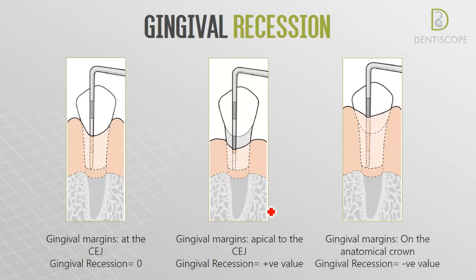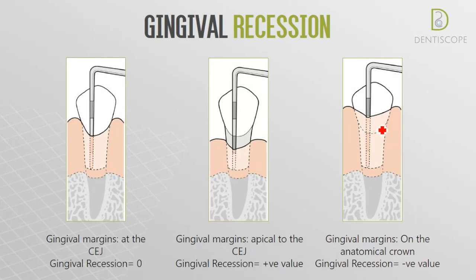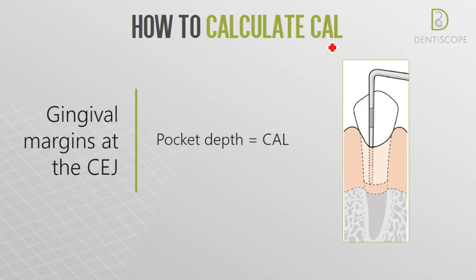However, when we have the gingival margin lying over the anatomical crown, the gingival recession is considered to be a negative value, or it's an overgrowth. Now, how to calculate the clinical attachment loss — there are three cases or three formulas in order to know how to calculate it.